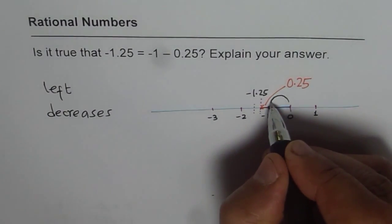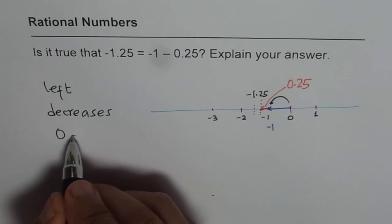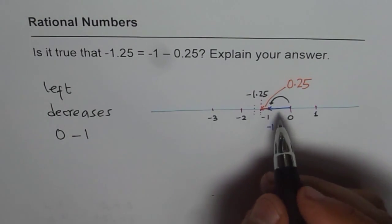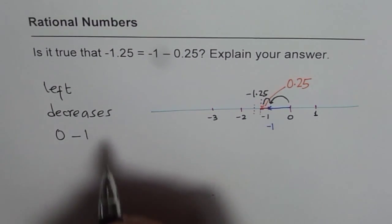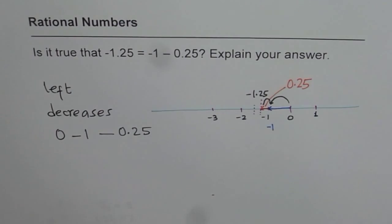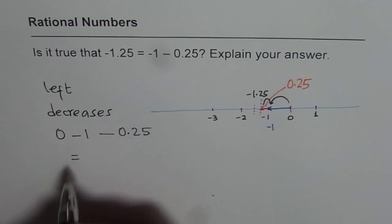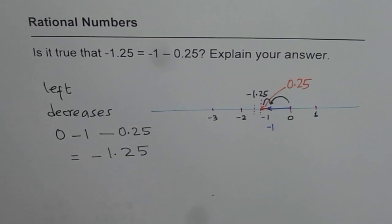So from 0, we come to -1. That means from 0, we take away 1. That is -1. And then, if I have to move further, then I take away 0.25. And that gives me -1.25. I hope you get it.